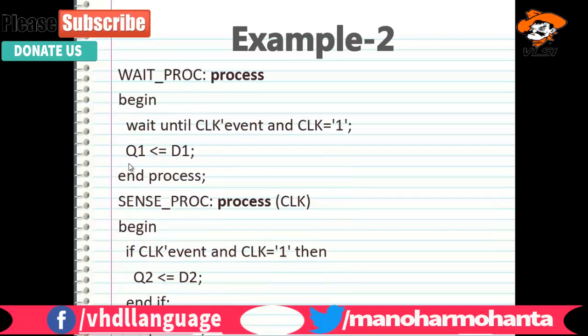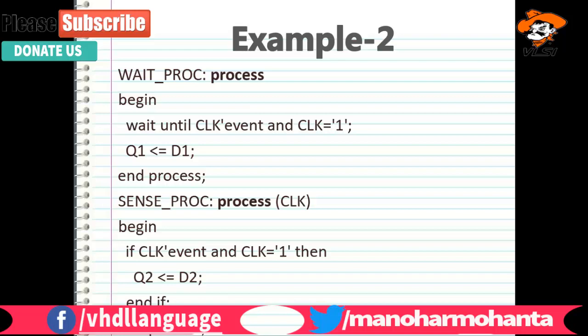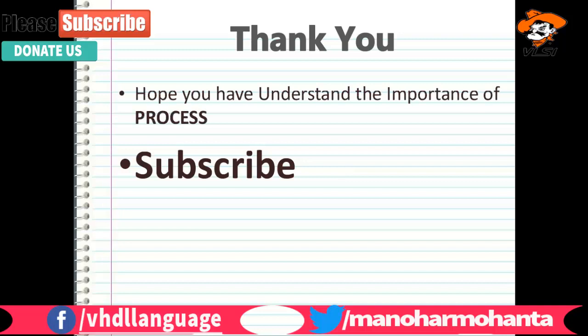Now let us see the second example with two processes. Here you can see one process ending here and another process ending here — these two processes execute at the same time. For instance, if I have two D flip-flop registers and both should be filled at the same time, I don't want to wait for the first register to fill before the second. So I write each register in its own process so all values are inserted simultaneously. That is the reason people use multiple processes in a single VHDL code.